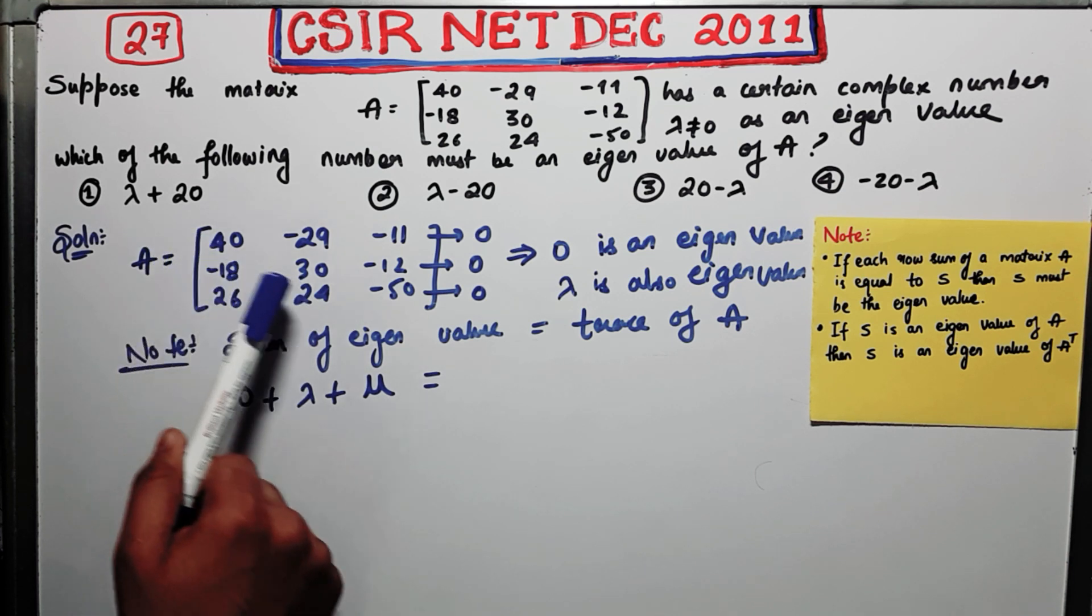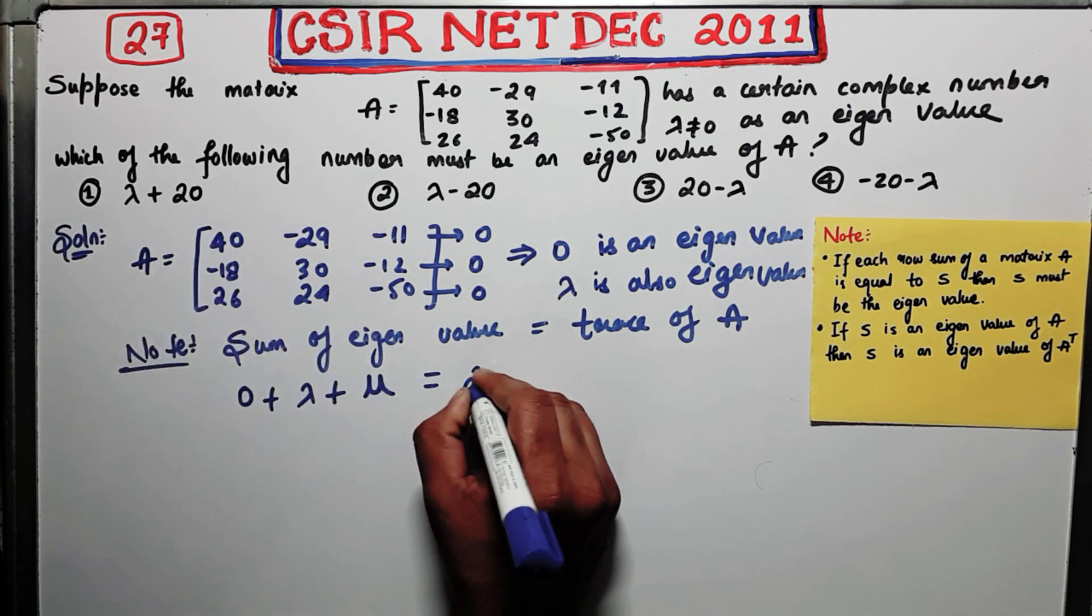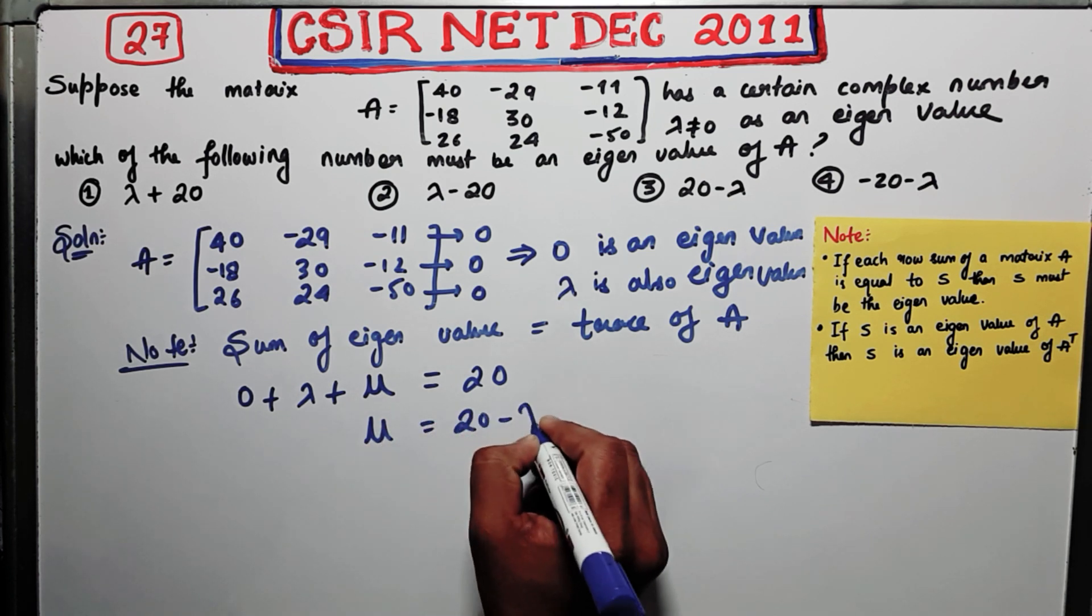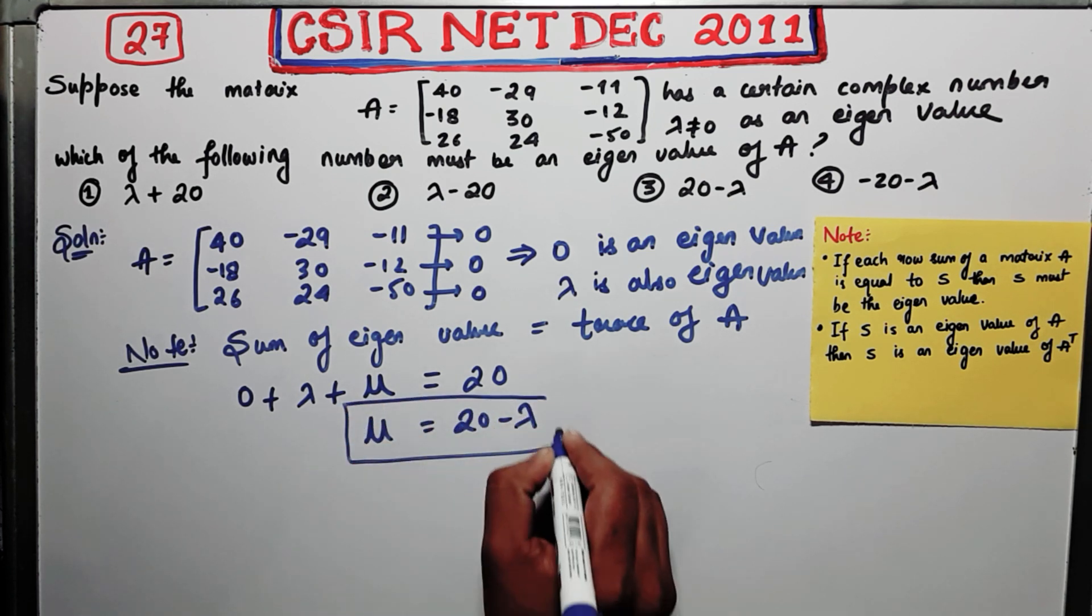Now just sum up this: 4, 3, 7. 7 minus 5 is 20. So your mu will be 20 minus lambda. So this will be your third eigenvalue.